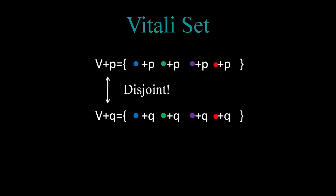One important fact that we will need is that if P and Q are different rational numbers, then V plus P and V plus Q will be disjoint. We can quickly convince ourselves why this must be so. For example, if one representative plus P equals another representative plus Q, then the difference of the two representatives is a rational number. However, they were chosen from different equivalence classes, and therefore we have a contradiction and this is not possible.